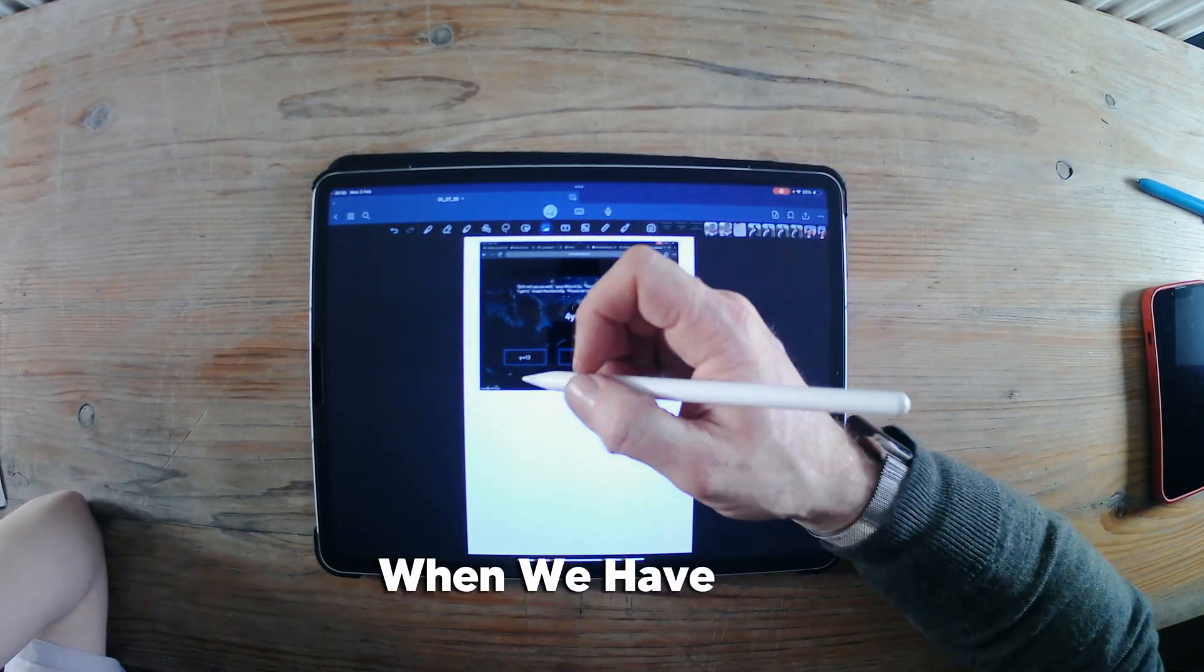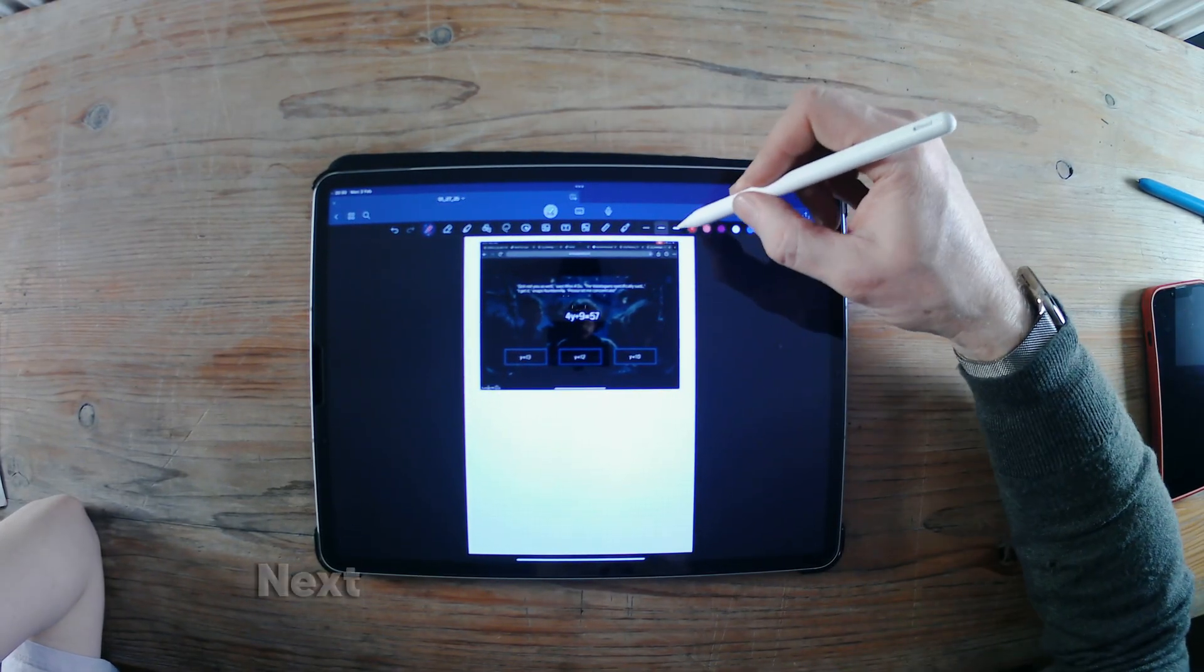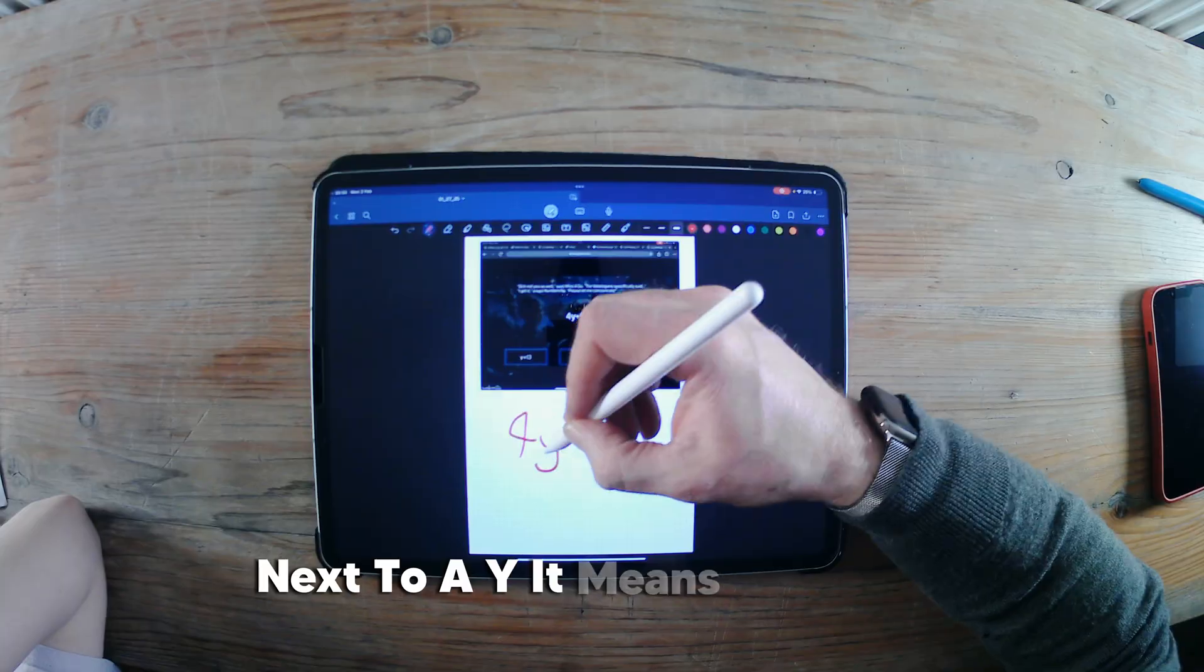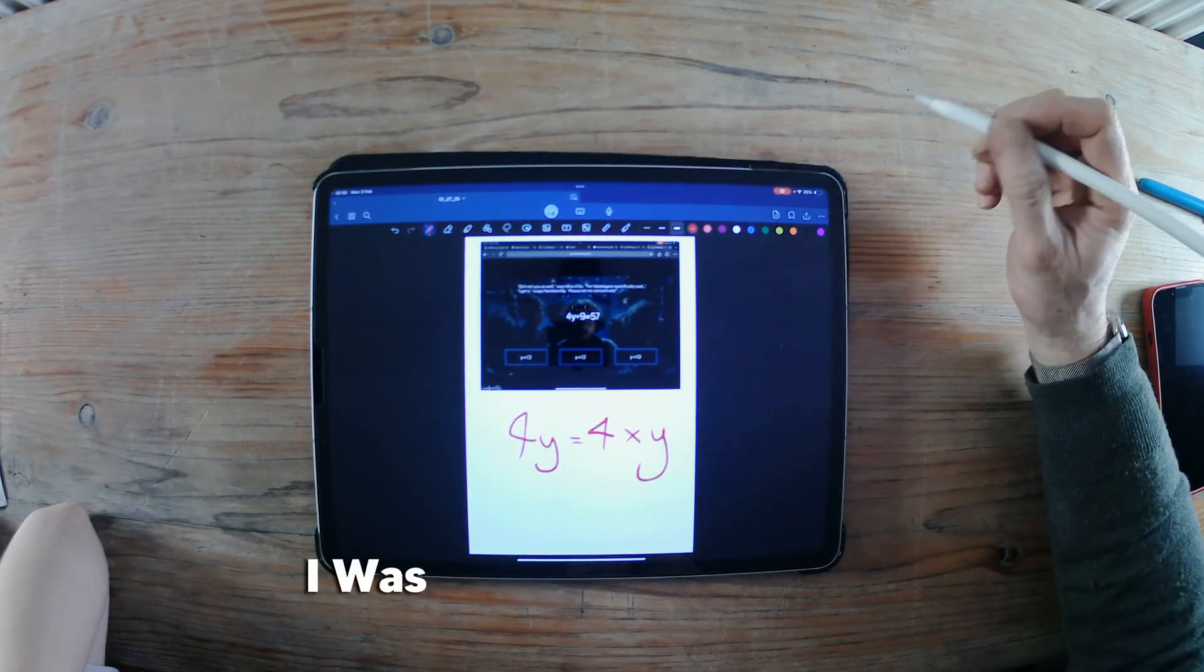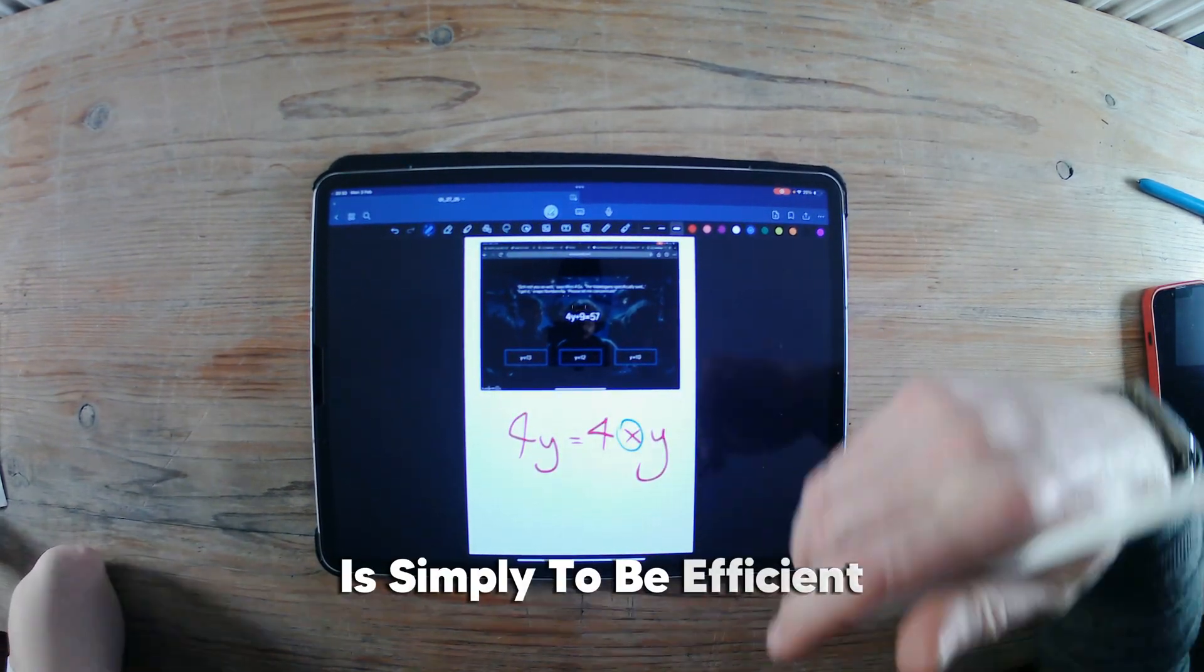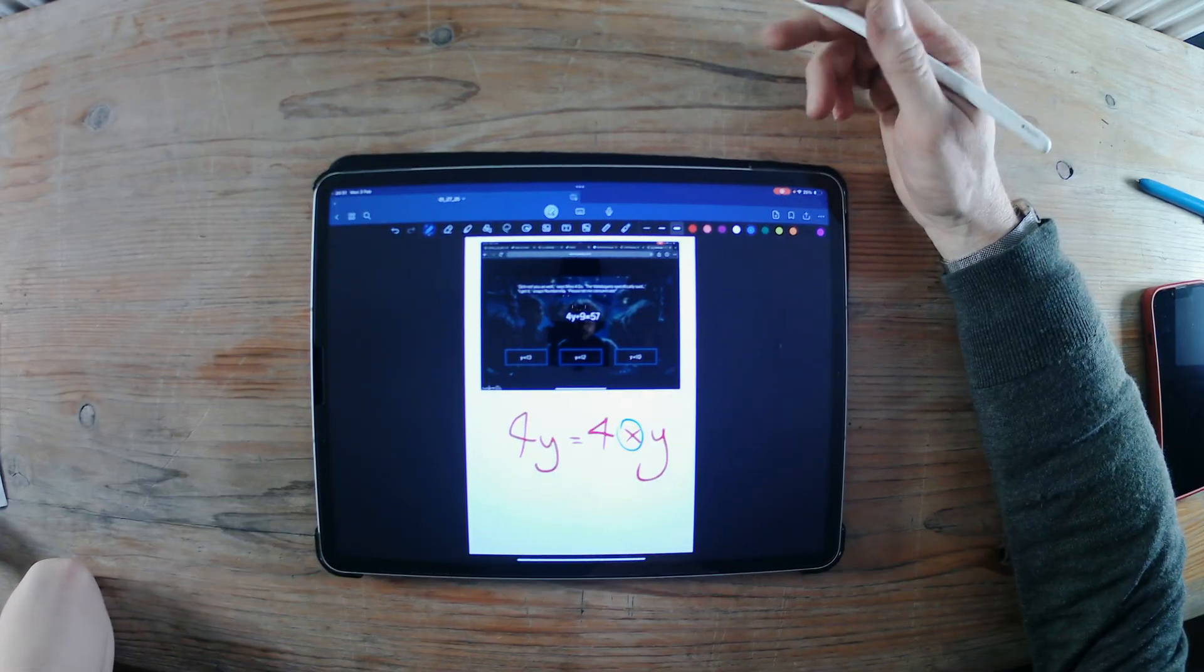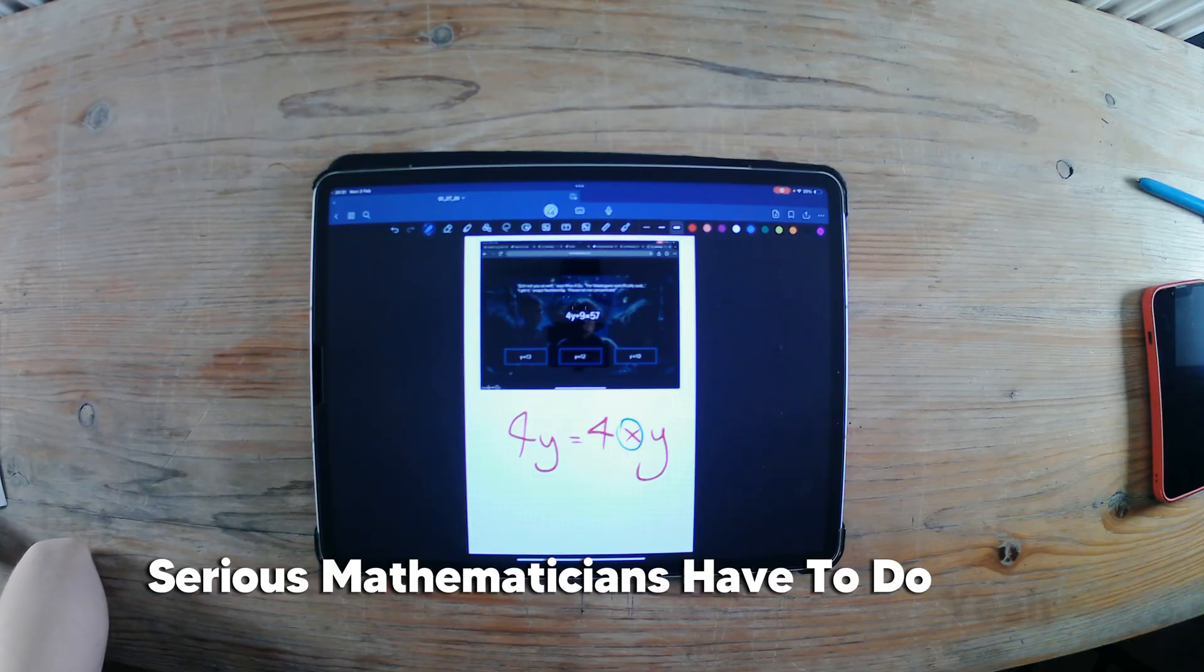More importantly, when we have 4 next to a y, it means 4 times y. I was getting to that. And the reason that we don't write the times is simply to be efficient. Okay, because when you're writing long, long strings of numbers, which is what, you know, serious mathematicians have to do... Yeah.